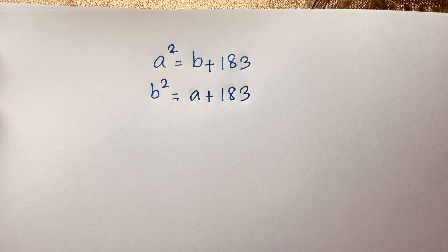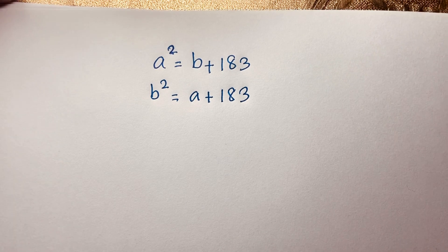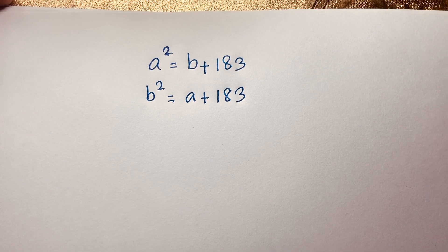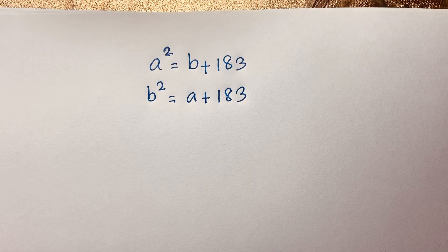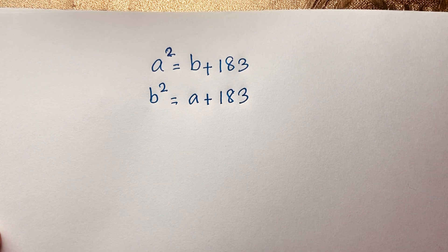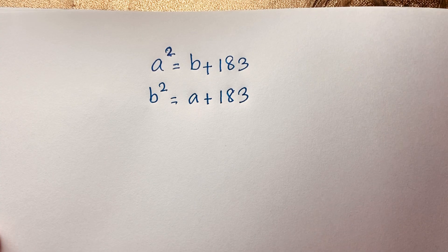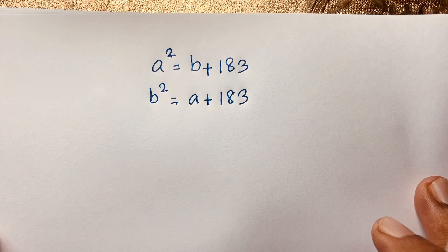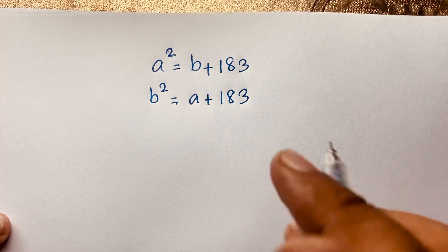Hello everyone. In this video we have solved a nice math problem. Here, a squared is equal to b plus 183, and b squared is equal to a plus 183. We will find out the values of a and b in this math problem.